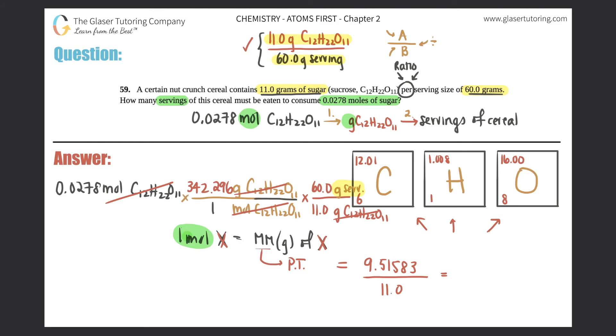And our answer should have three sig figs in it, so it should be 0.865, and this is basically the serving size. So box this answer off - this is the amount of serving that's in the 0.0278 moles of sugar. So roughly it's roughly one serving size, but the right answer is 0.865.